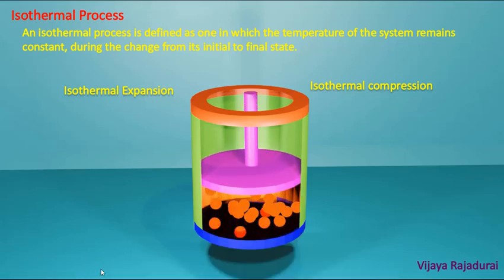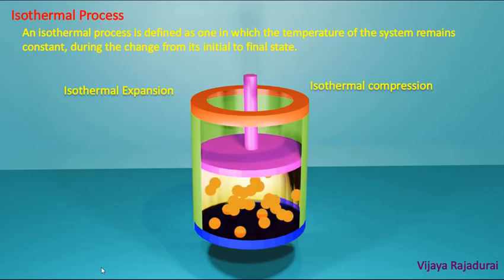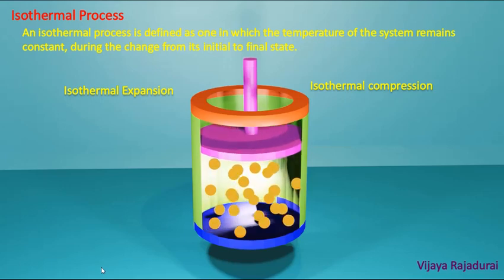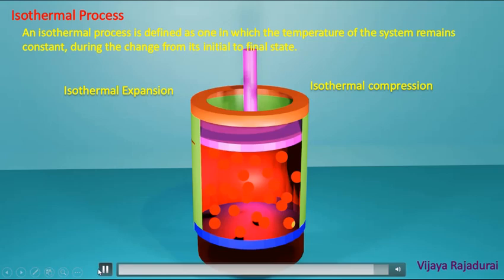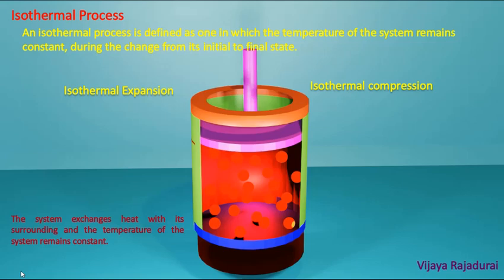Next we see what happens in isothermal expansion. When the piston moves in the upward direction, the gas molecules are expanding, so the temperature of the system decreases and the pressure also decreases, but the volume increases from lower volume to higher volume. But in an isothermal process, we have to maintain the temperature of the system, so we have to apply heat from the surrounding to the system to maintain the constant temperature.